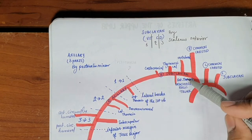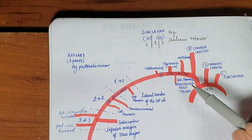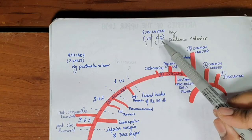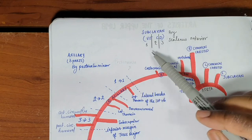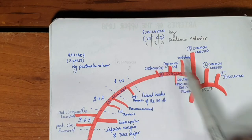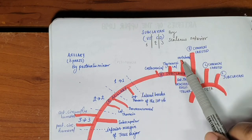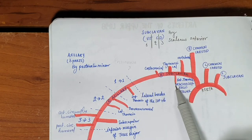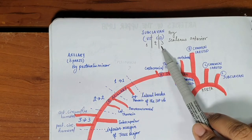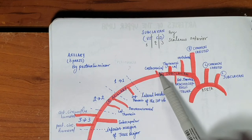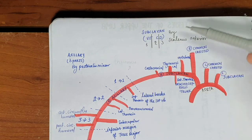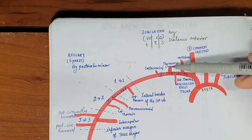The subclavian artery is divided into three parts by the scalenus anterior muscle. The first part gives out the vertebral artery, the internal thoracic artery, and the thyrocervical trunk. The second part gives out the costocervical trunk, and the third part gives out the dorsal scapular — though in some books the dorsal scapular is considered to arise from the thyrocervical trunk itself.